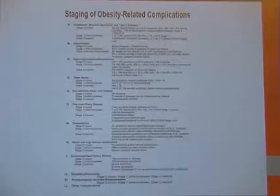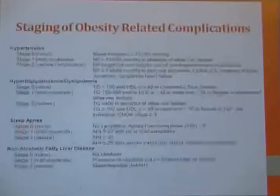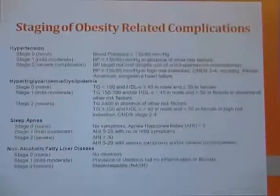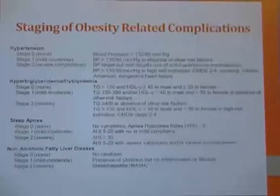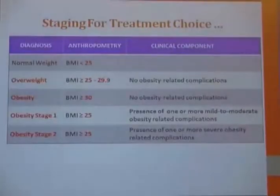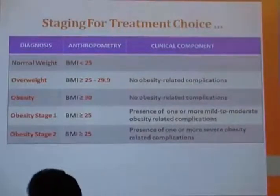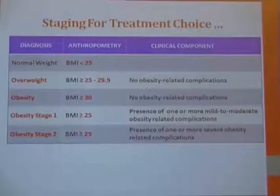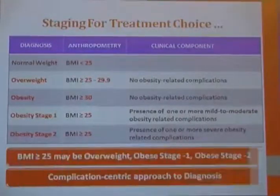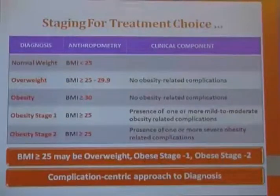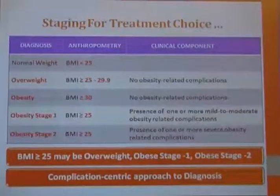This is the staging of obesity-related complications. Every criterion has stage zero, stage one, and stage two complication-specific details. After all these specifications, patients are finally staged into overweight, obesity stage one, and obesity stage two. A BMI above 25 may be overweight, obesity stage one, or obesity stage two. This represents a complication-centric approach to diagnosis.